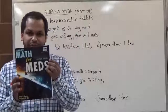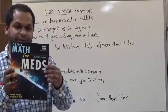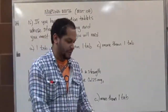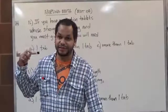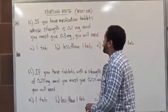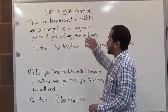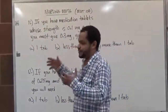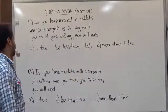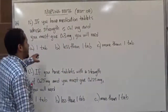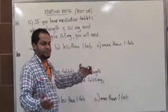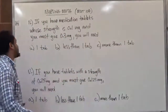We're going to be covering some problems on page 9, which are number 11 and number 12. In these problems we're going to be dealing with dosages, so we want to pay attention to whether or not we're going to need a tab, less than a tab, or more than a tab — which are the multiple choices for the answers.